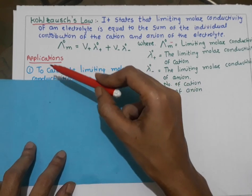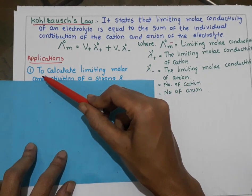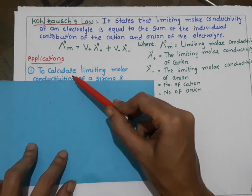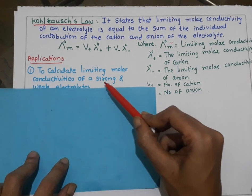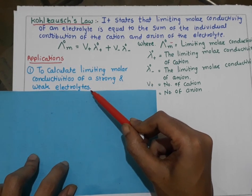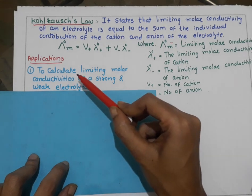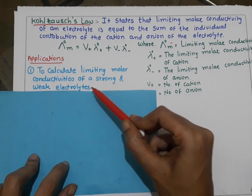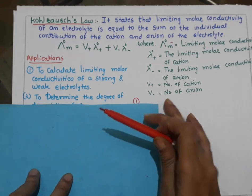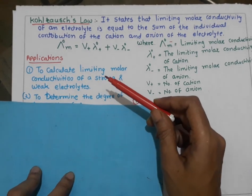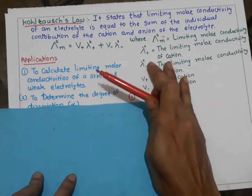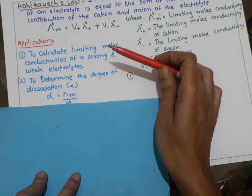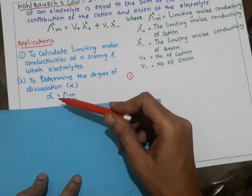Now let's see the applications of Kohlrausch's Law. First, it is applicable to calculate the limiting molar conductivity of strong and weak electrolytes. Second, it is used to determine the degree of dissociation.